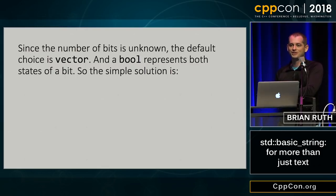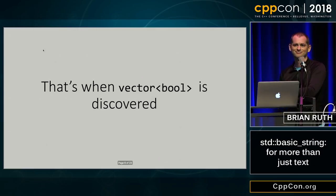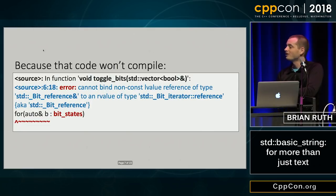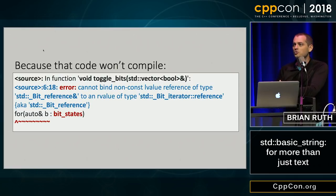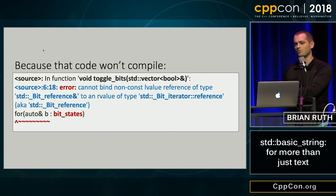That gives you something like this. Throw in a nice range-for and this should work, right? Well, this is where you find out about vector<bool>. You compile it and you get an error, and it really doesn't tell you why vector<bool> doesn't compile — that it's not a container and that the things it returns aren't really bools. They're things that pretend to be bools.